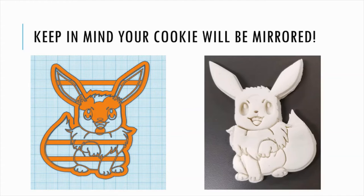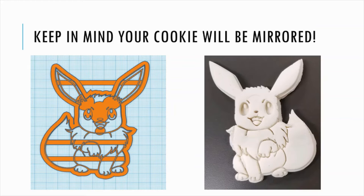One last thing to consider: whenever you create your cookie cutters, they will be mirrored from the final image. That might not seem like an issue if it's something like Eevee where left or right doesn't matter. But adding things like names or numbers could look really weird when they come out backwards. So that is something to consider — you will have to mirror your image, and I can show you how to do that in Tinkercad.